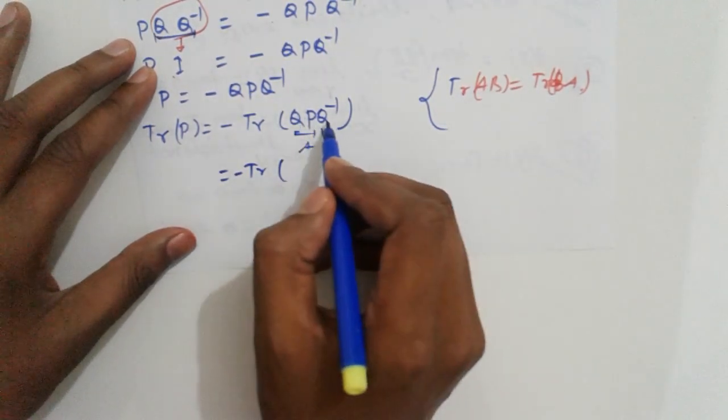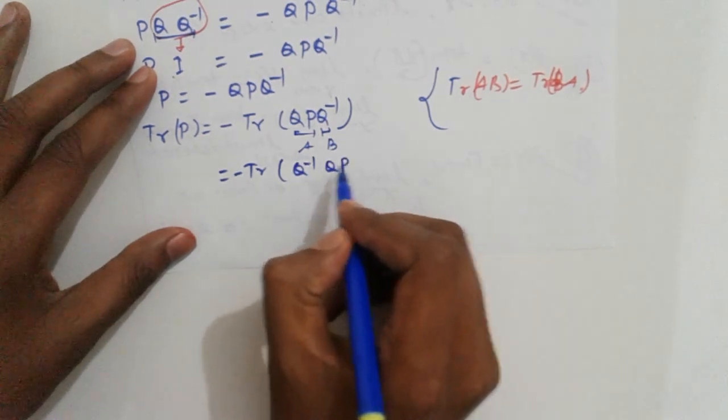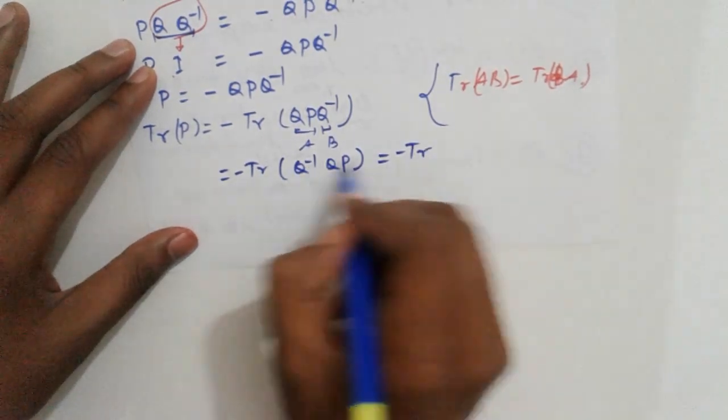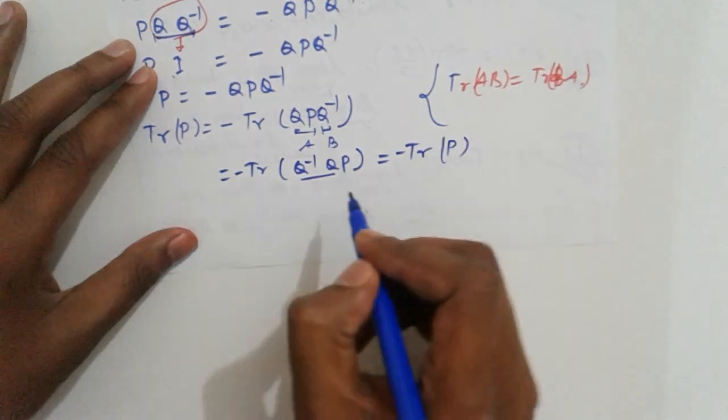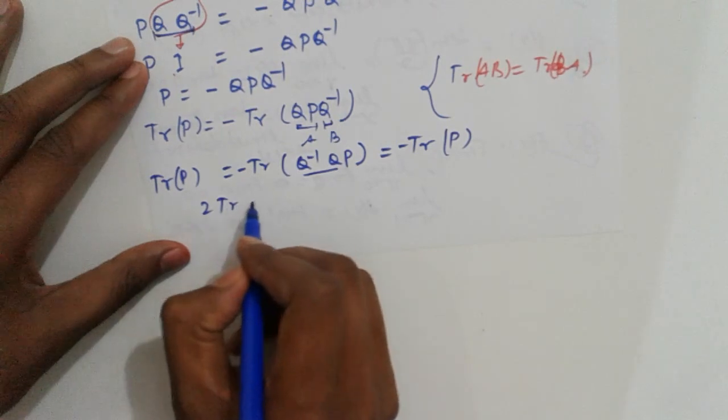Q inverse QP is the same as QP. That is minus trace of QP, which is also trace of P. Transferring to the left hand side: two trace of P equals zero.